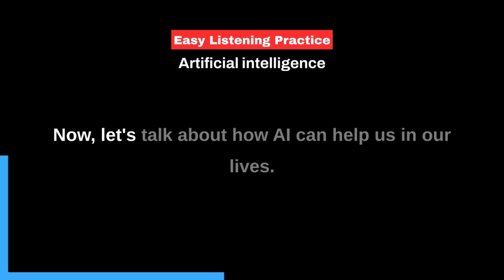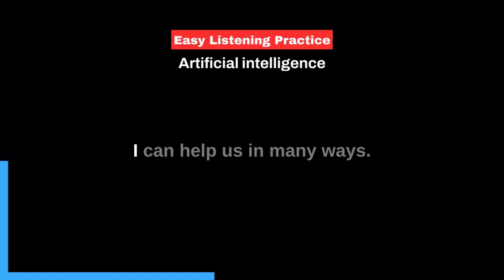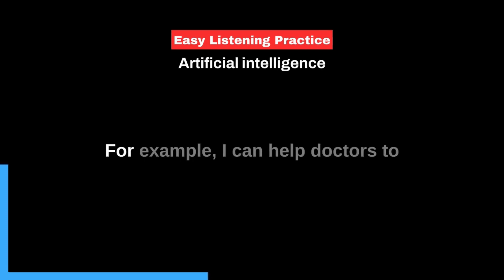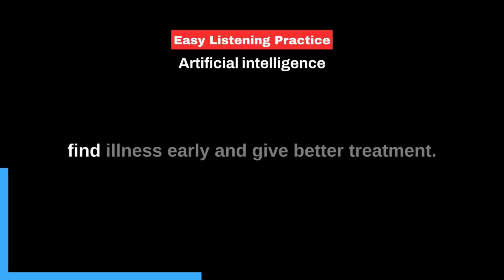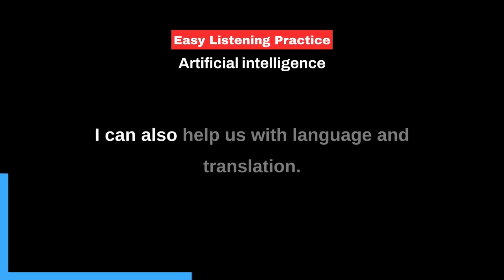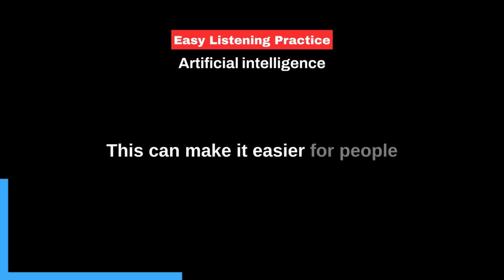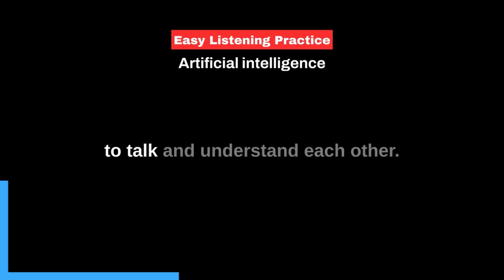Now, let's talk about how AI can help us in our lives. AI can help us in many ways. For example, AI can help doctors to find illness early and give better treatment. AI can also help us with language and translation. This can make it easier for people to talk and understand each other.